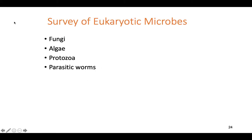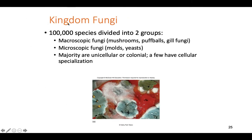Let's go over some of the important eukaryotic microbes you might encounter in a medical setting. The first is Kingdom Fungi — about 100,000 identified species, broken into two large groups: macroscopic ones you can see, and microscopic ones you can't. Microscopic fungi include molds and yeast. Macroscopic fungi include mushrooms, toadstools, puffballs, and fungi with gills.